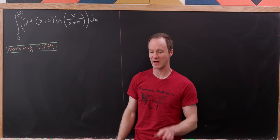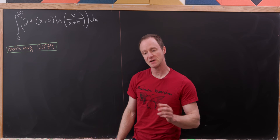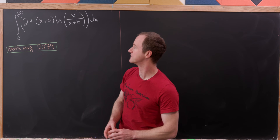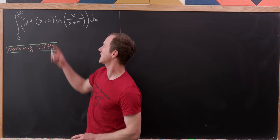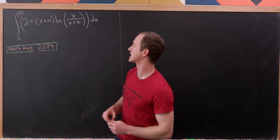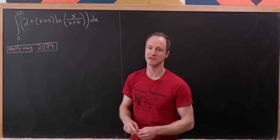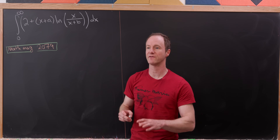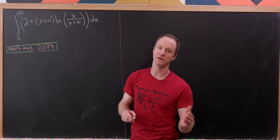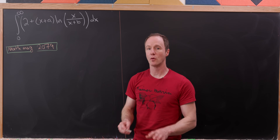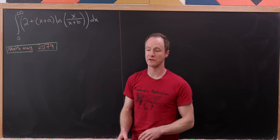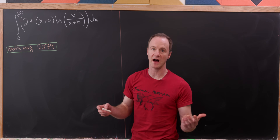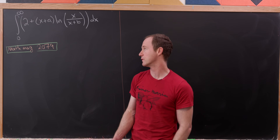Let's look at this nice integral from the Math Magazine. In particular, it's the integral from 0 to infinity of 2 plus x plus a times the natural log of x over x plus b. Our goal here is not just to evaluate the integral, but find all the values of a and b where this integral converges, and then, when it converges, find the value of the integral.